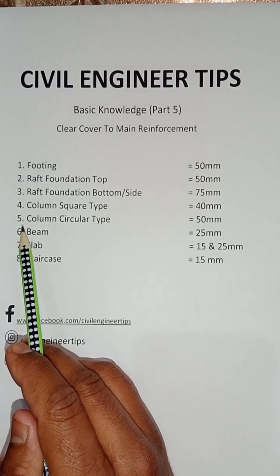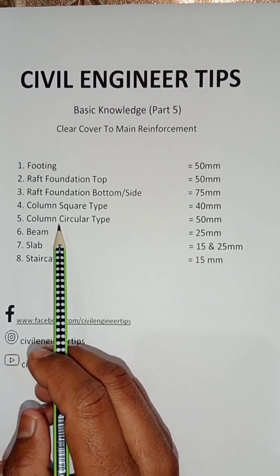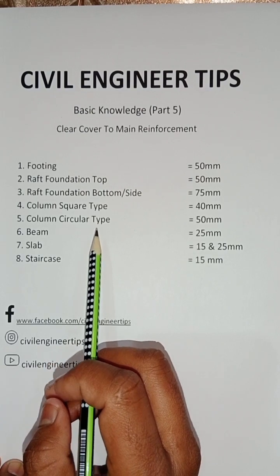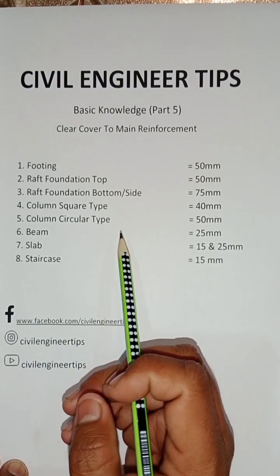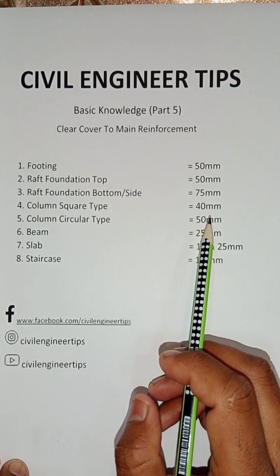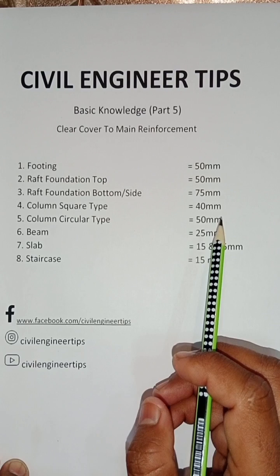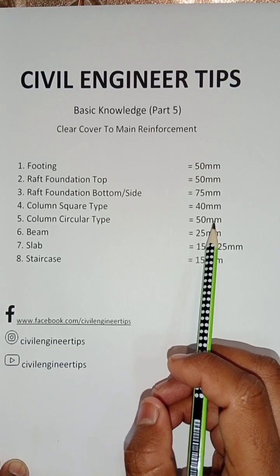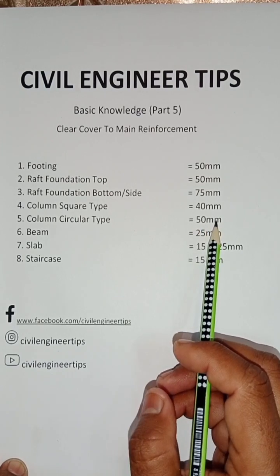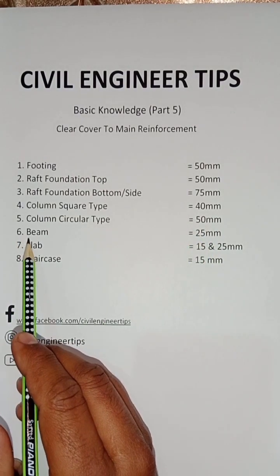Number five is the circular type column. A circular rounded column is basically called in engineering language a spiral column. For this column, we provide a clear cover of 50 mm.